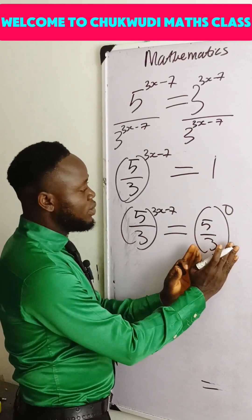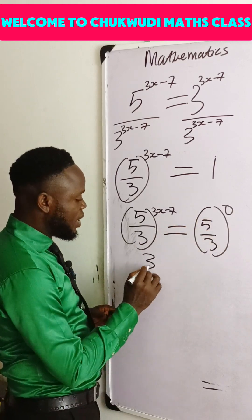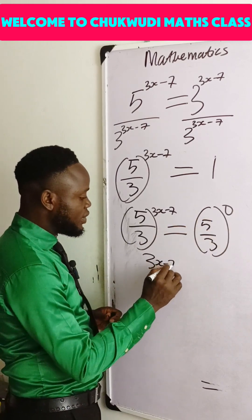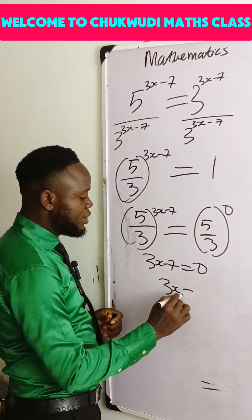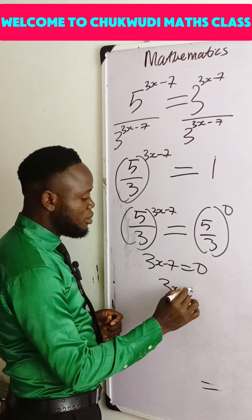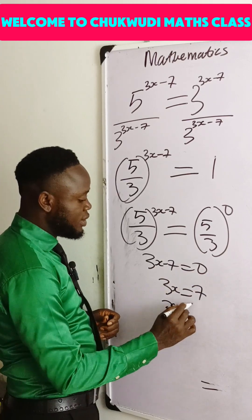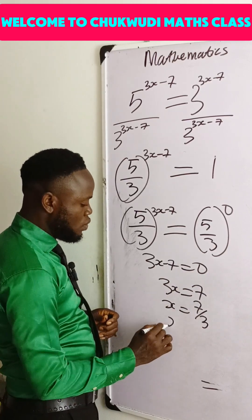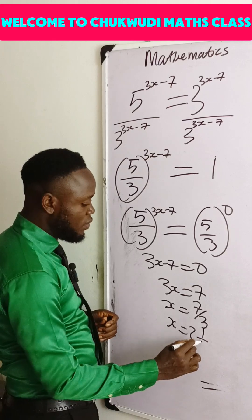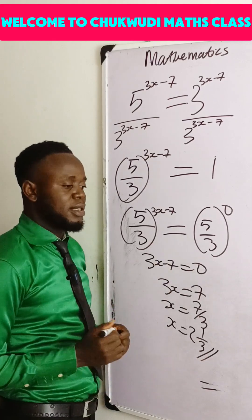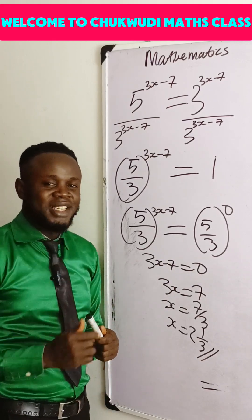Since the bases are now equal, the exponents must be equal. So 3x minus 7 is equal to 0. That means 3x equals 7, and x equals 7 over 3, which gives us 2 and 1 over 3 as our final answer. Thanks for watching and see you in the next video.